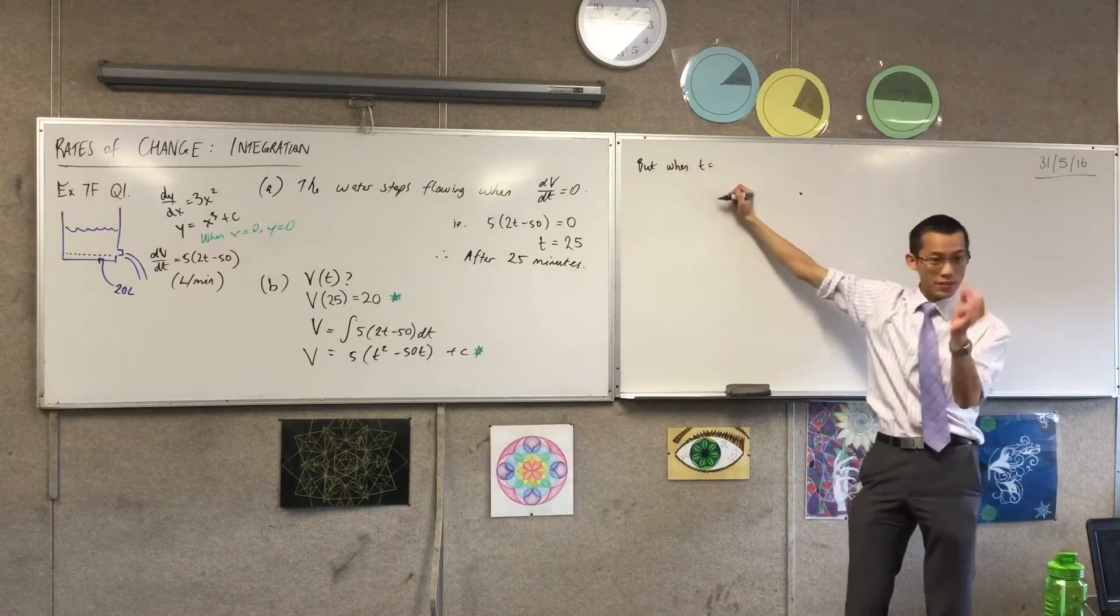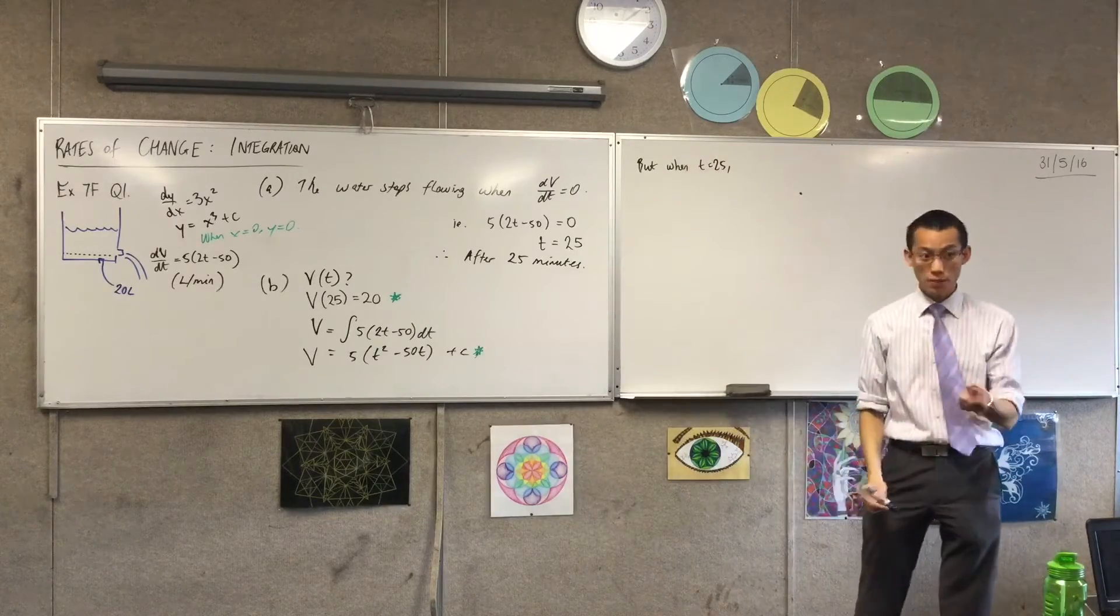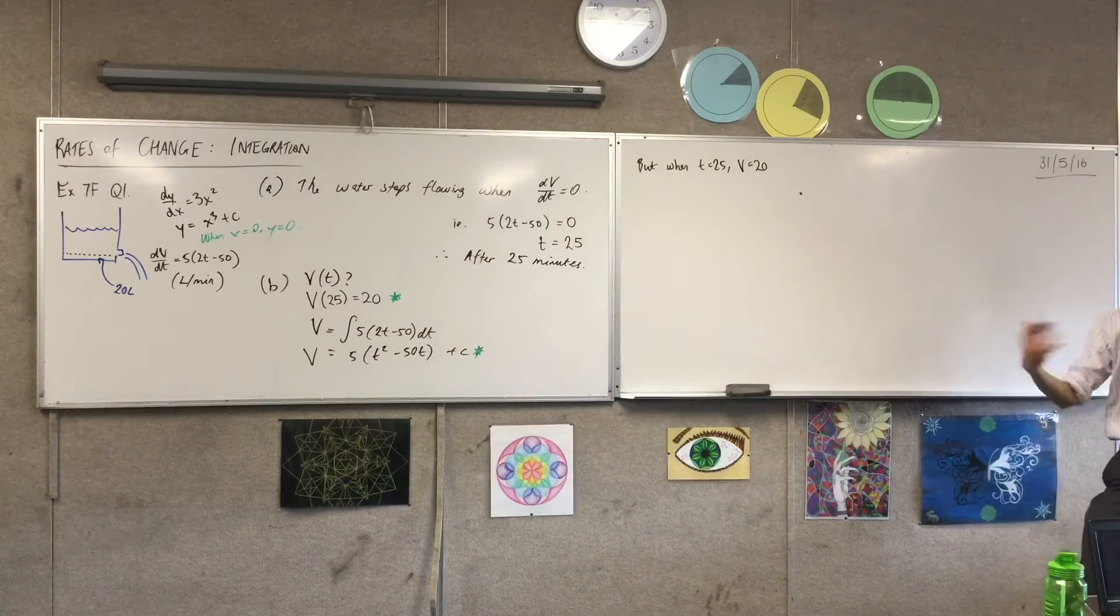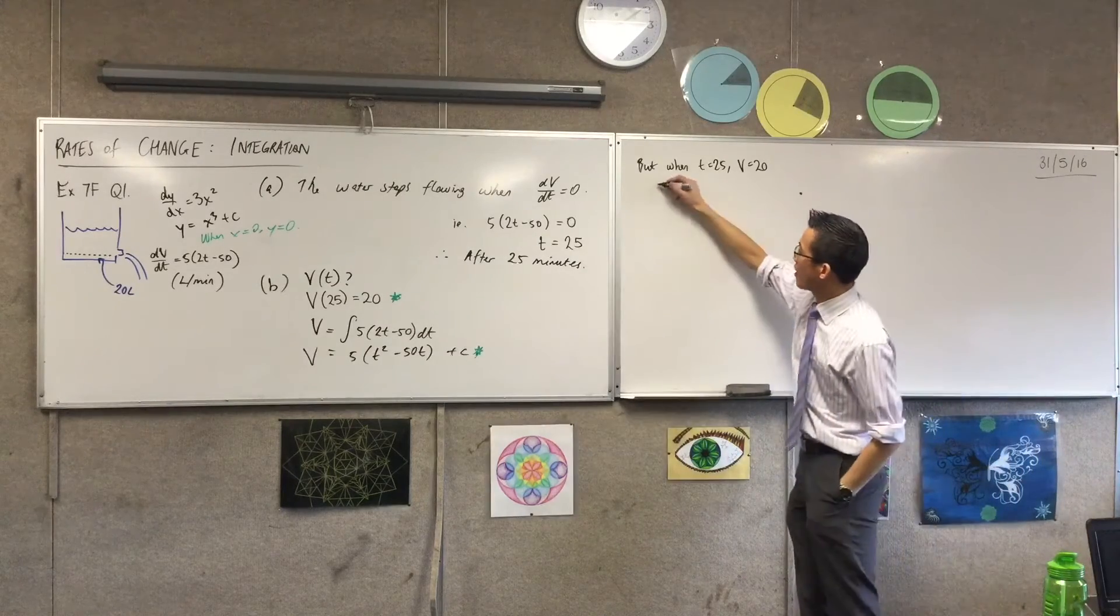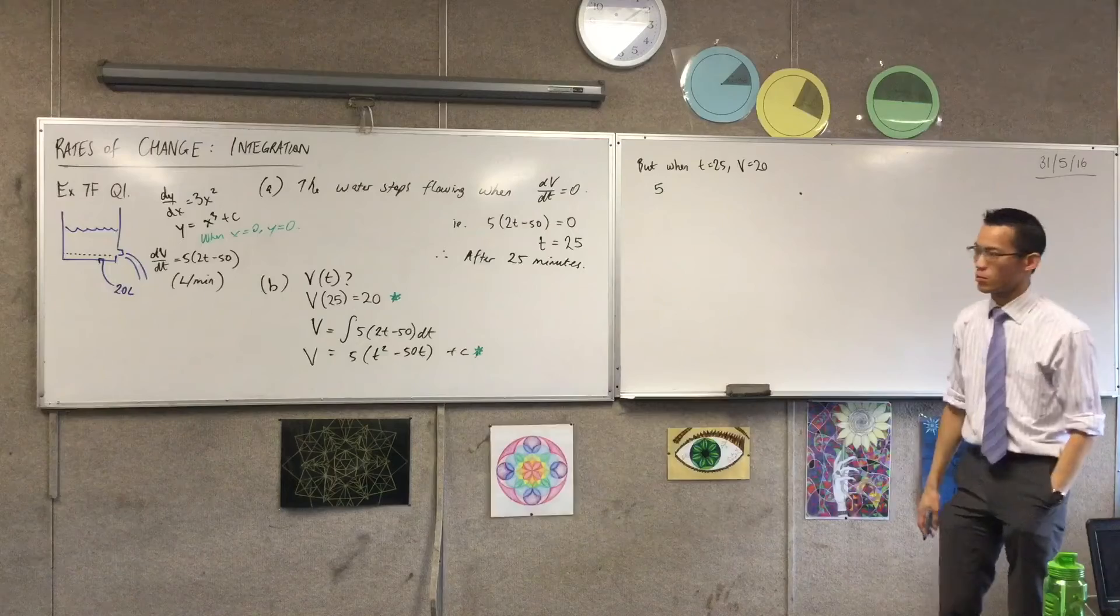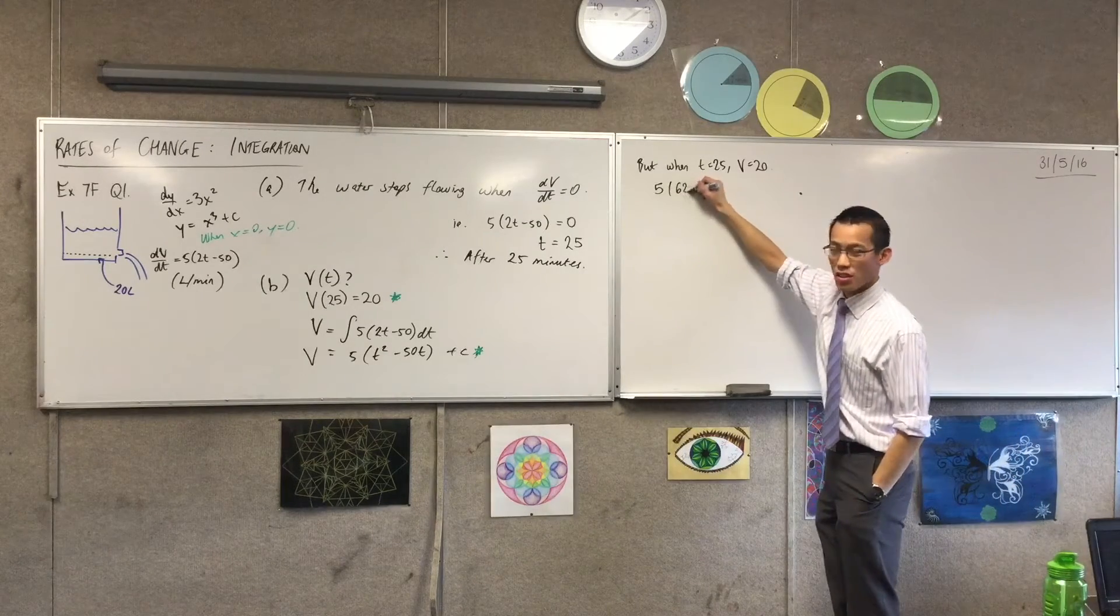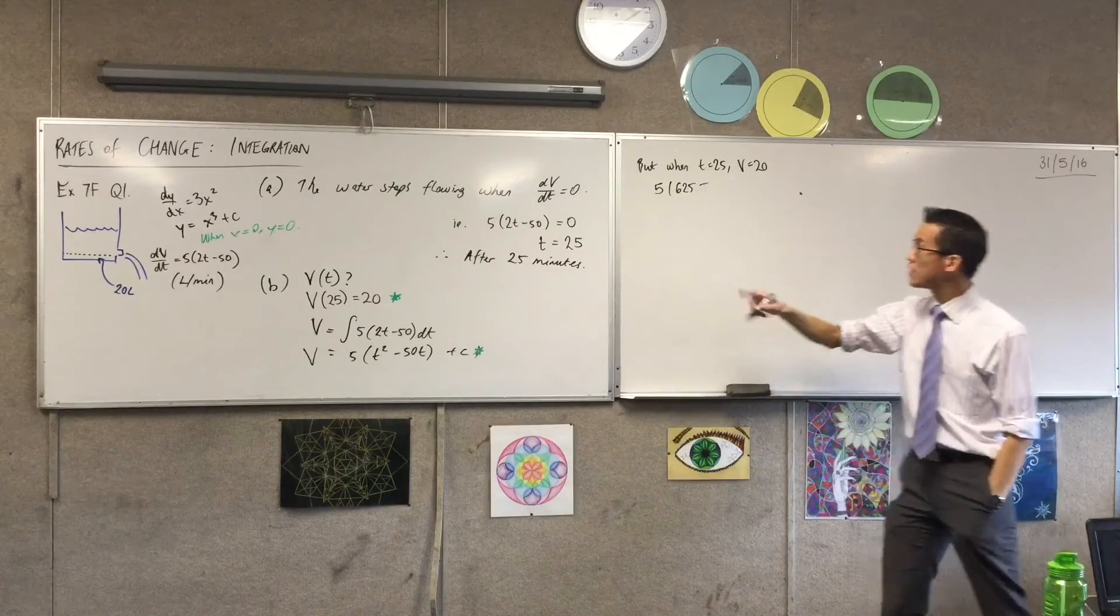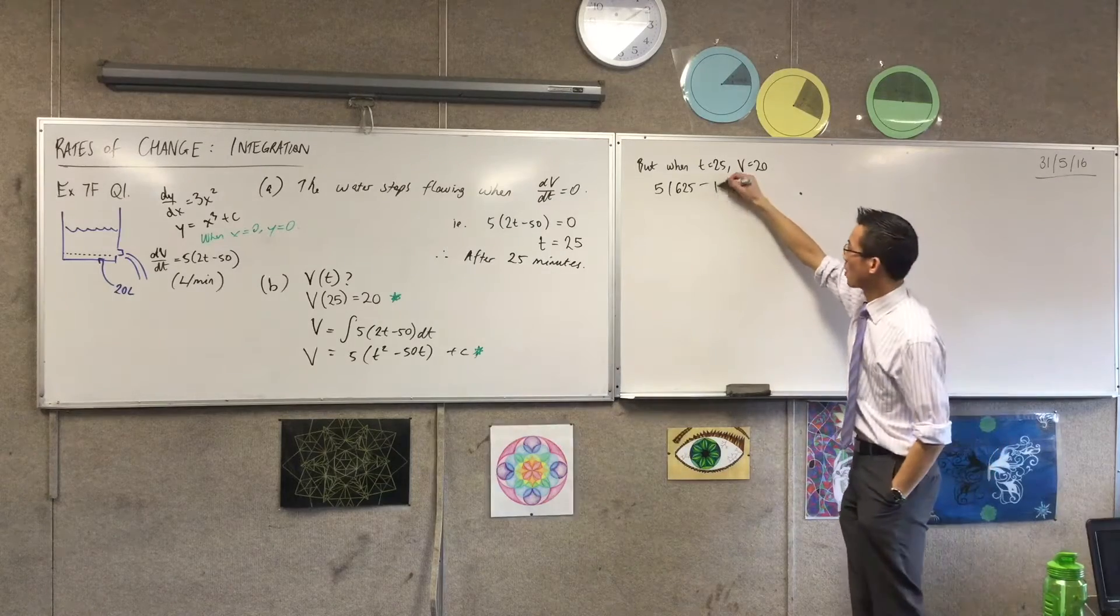when there's a given time, namely at time 25, I know what the volume is equal to at that point. So I'm going to substitute that into my integrated statement over here. So I'm going to say, 5 times, what is 25 squared? I think it's 625, yeah, take away 50 lots of 25, 50, 25.